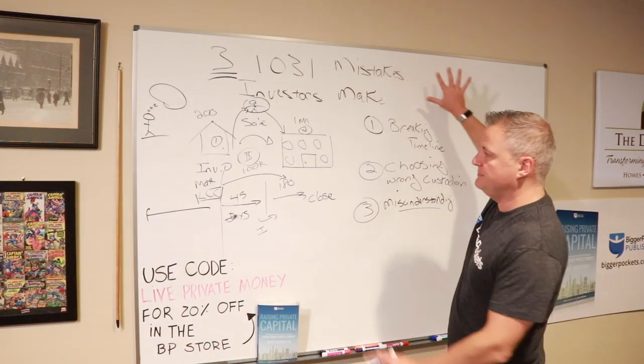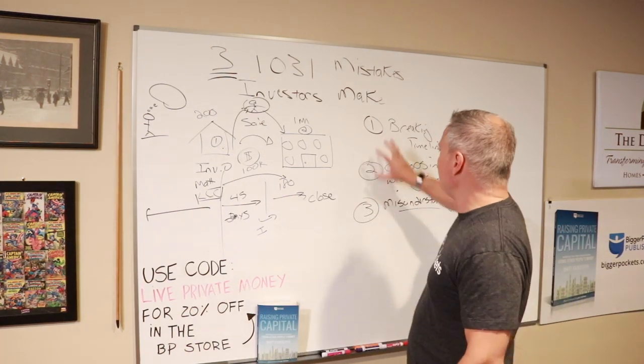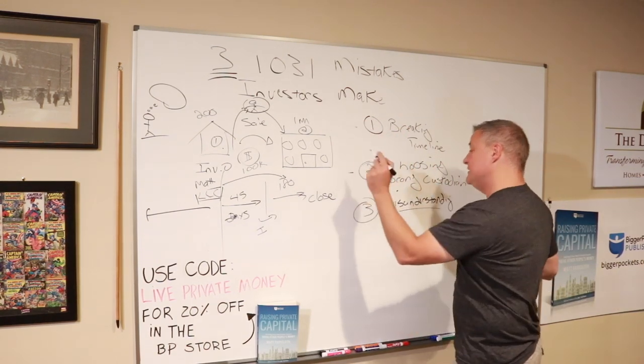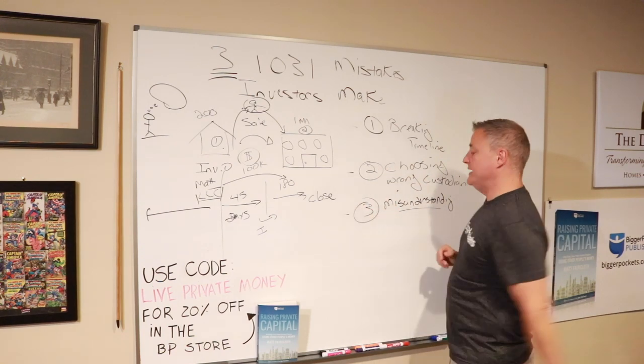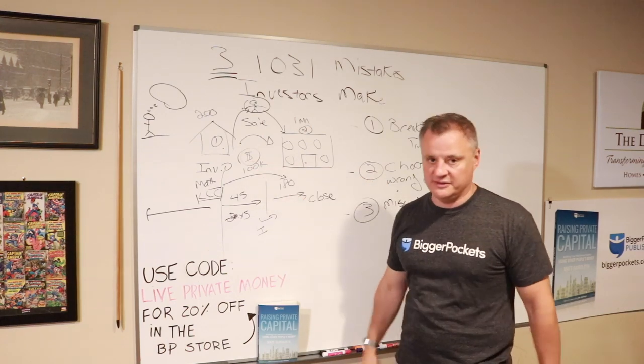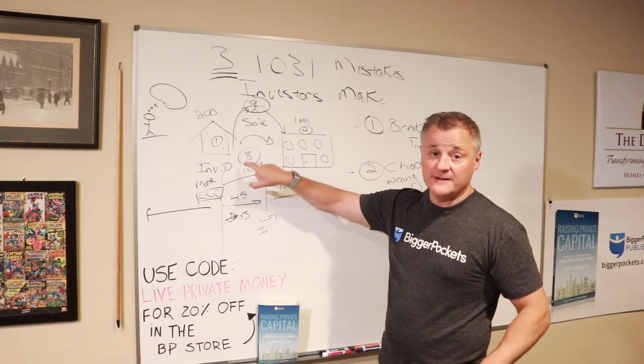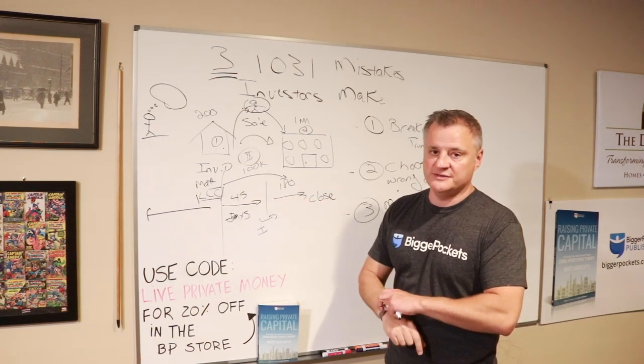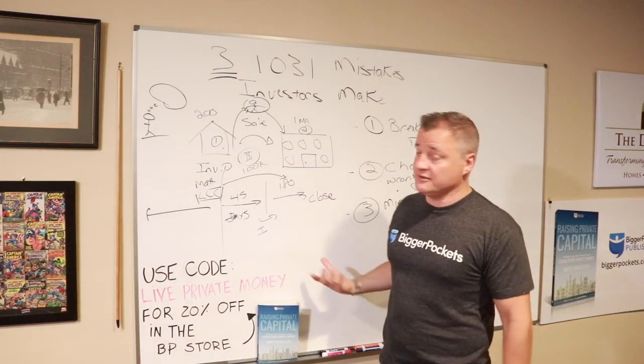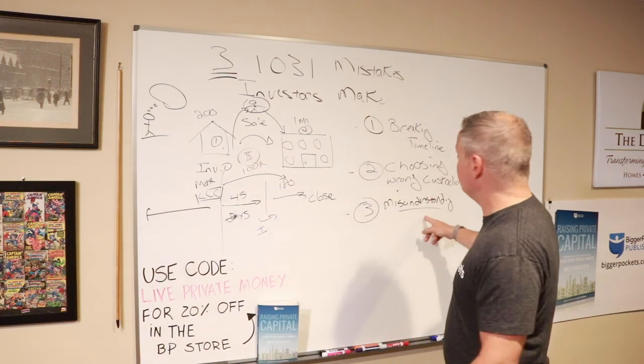All these things can be done by doing the right research. These problems can be avoided by doing the right research: breaking the timeline, choosing the wrong custodian, and just general misunderstandings on the way the transfer has to happen or trying to use part of the money for your down payment or due diligence. You can't touch it until the closing date on the property. You can't use any of this money for a phase one environmental study or appraisal.